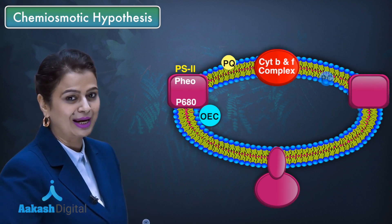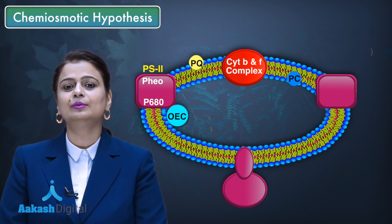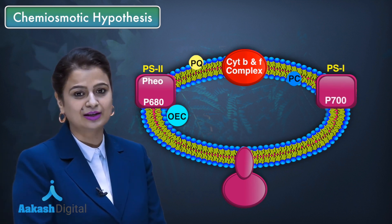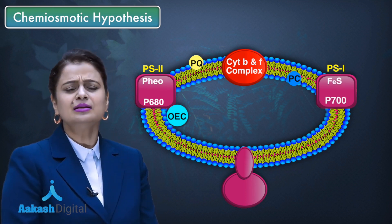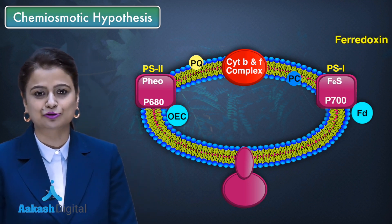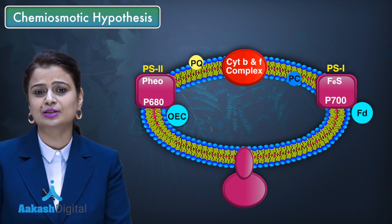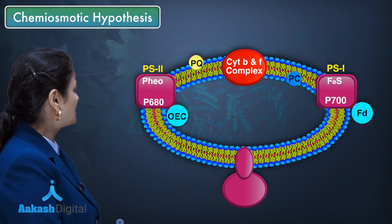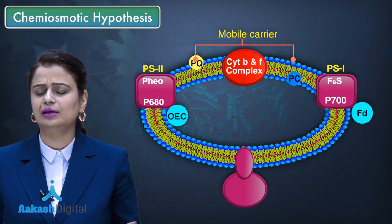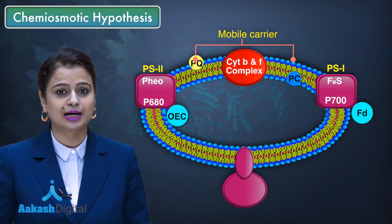Another mobile carrier is plastocyanin, which can move within the thylakoid membrane and is blue in color due to the presence of copper. Then comes photosystem 1, with P700 as the reaction center and FeS as a component. Ferredoxin is loosely attached to photosystem 1 on the outer side. The mobile carriers associated with the electron transport system are plastoquinone and plastocyanin — ferredoxin is not a mobile carrier, it is loosely attached.